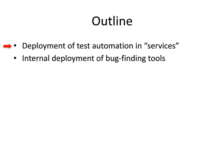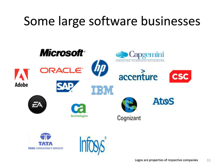In the time available today, I'd like to present two topics. First, deployment of test automation in services — I'll explain momentarily what services means. Then in the later part, I'll talk about internal deployment of bug finding tools. Not everyone may be familiar with what services are, so let me take a couple of minutes to explain. On this page you see logos of a number of businesses or companies you'd associate with software companies. On the left-hand side are companies often associated with product businesses.